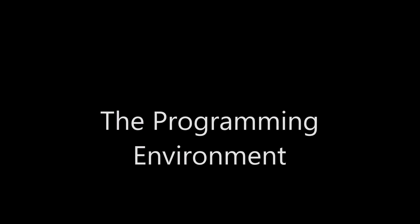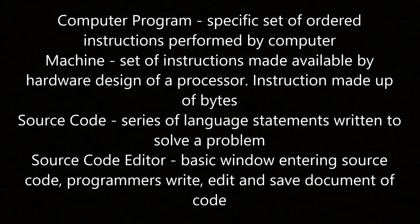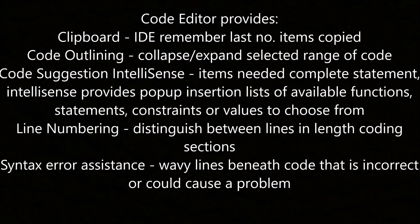The programming environment. A computer program is a specific set of ordered instructions performed by the computer. A machine code instruction is made up of bytes and is made available by the hardware design of the processor. The source code is a series of language statements written to solve a problem, and the source code editor is a basic window where programmers write, edit, and save code. Code editors provide a clipboard where the IDE remembers the last number of items copied, code outline which collapses and expands the range of code, and code suggestions via IntelliSense — when items are needed to complete a statement, IntelliSense provides a pop-up list of available functions, statements, constraints, or values. Line numbering distinguishes between lines in the code, and syntax error indicators show wavy lines beneath incorrect code.